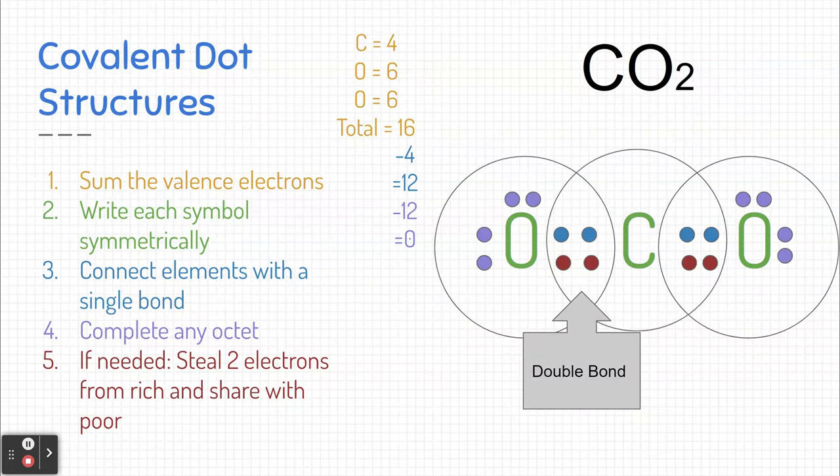Four, use up all the rest of your valence electrons to complete any octet. And then five, if you need to do this step, move sets of electrons from the elements that are electron-rich to those elements that might need to share those electrons in order to get their octet. All right, good luck!